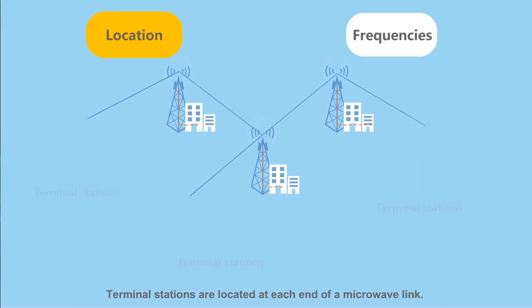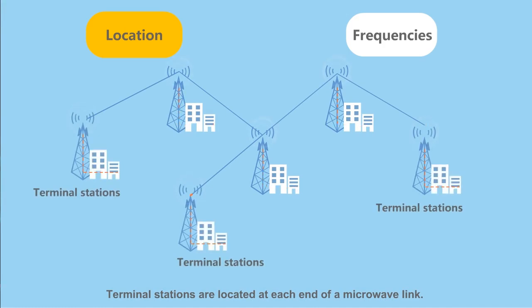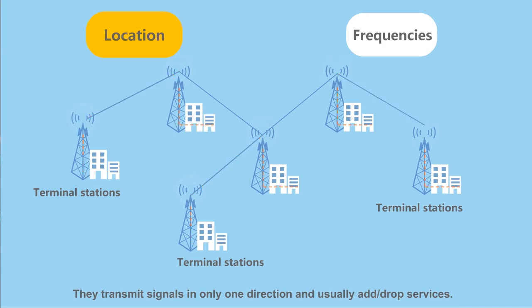Terminal stations are located at each end of a microwave link. They transmit signals in only one direction and usually add and drop services.